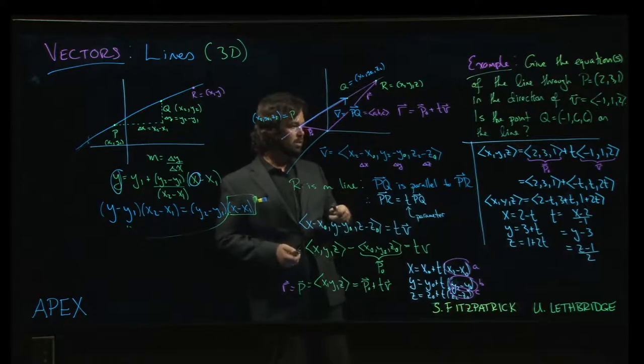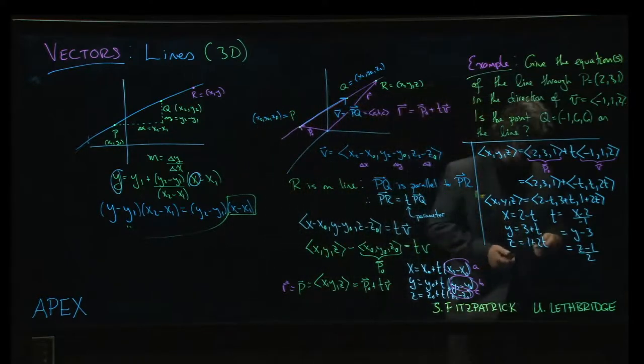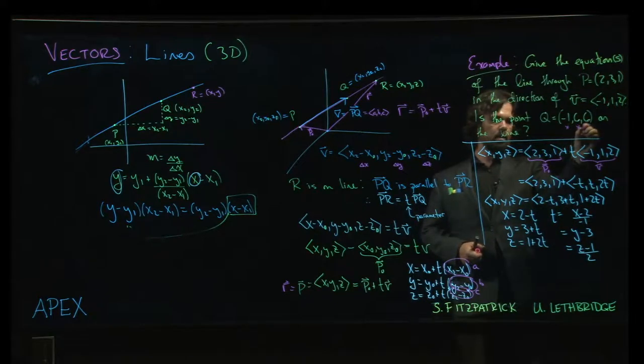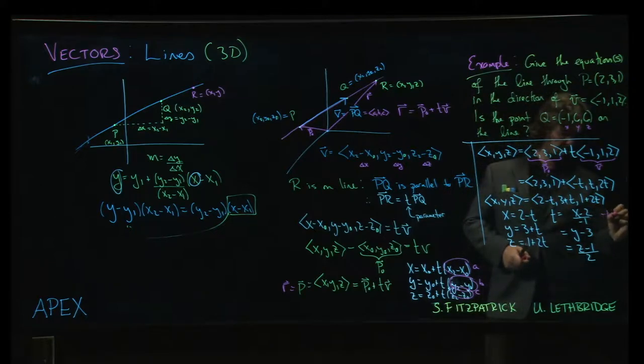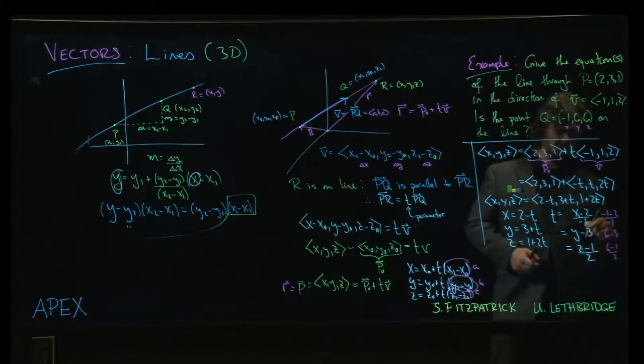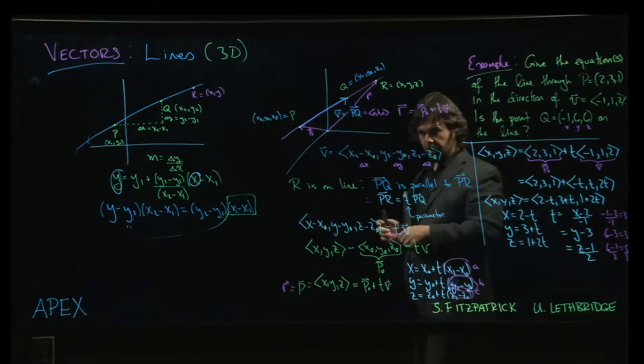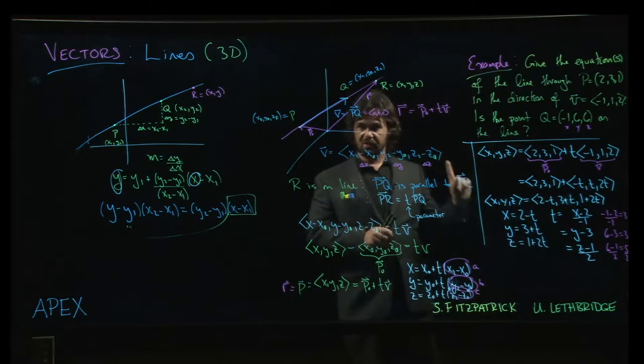So now, if we want to know whether that point q is on the line, well, there are a few ways to do it. One is to try it here with that as my x, my y, and my z. And so I say, okay, so (-1 - 2)/(-1), and then (6 - 3), and (6 - 1)/2. Well, see, pretty quickly, these aren't—that's 3, that's 3. Oh, but this is 5/2. So we can't realize those values for the same parameter. All of them should be equal to the same value of that parameter t. So the point q is not on the line.